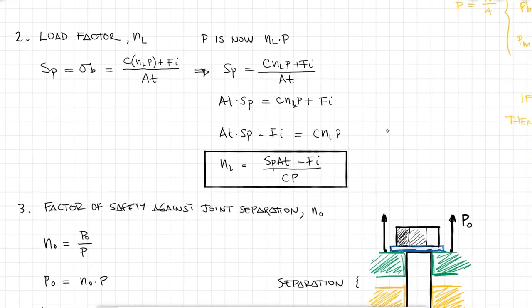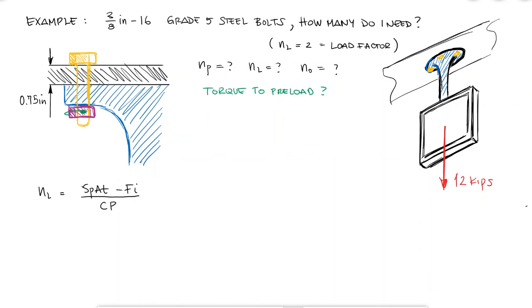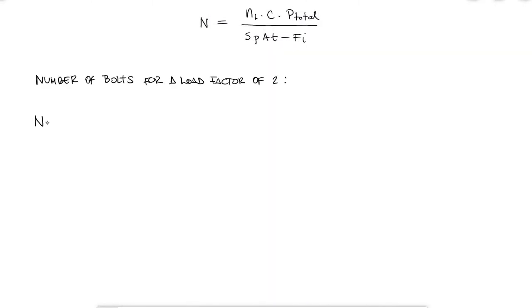I know that the load factor 2 is what's gonna determine how many bolts I'm gonna be using, and I know that in this case, each bolt will be subjected to a load of P over the number of bolts, so I can find an expression for the load factor in terms of the number of bolts N, and solve for that number of bolts N.